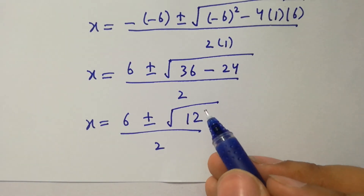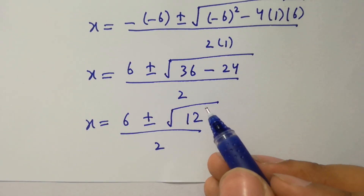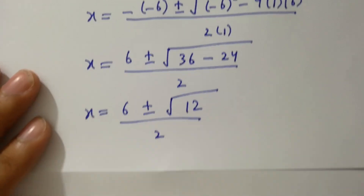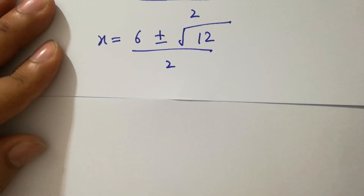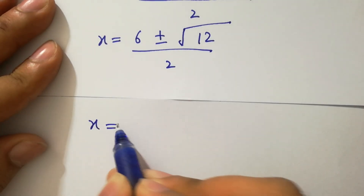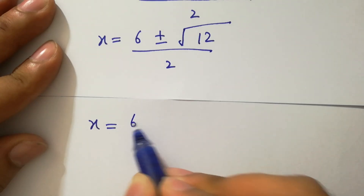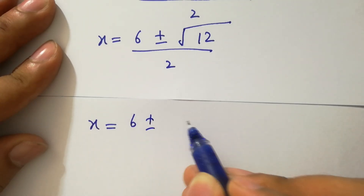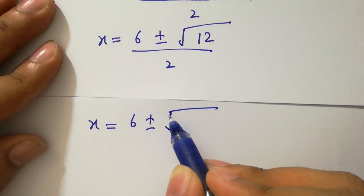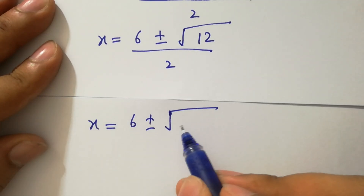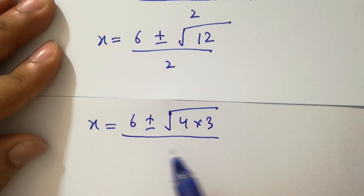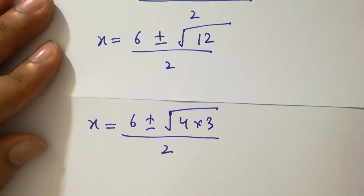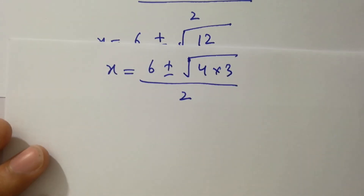Now, 12 is the same as 4 times 3, so x equal to 6 plus or minus square root of (4 times 3) over 2.